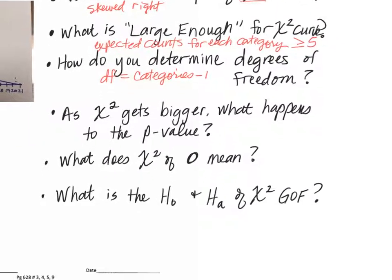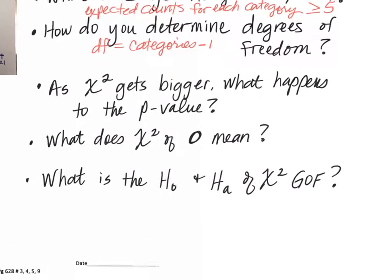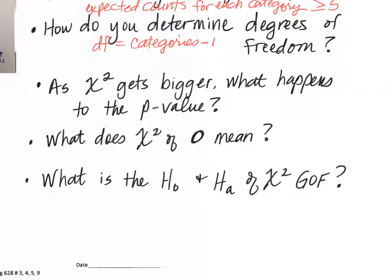As the chi-squared value gets bigger, what's happening to your p-value? The p-value gets smaller. And what does a chi-squared value of zero mean? It means everything was exactly what it was supposed to be — all of the observed were exactly what they were expected to be.